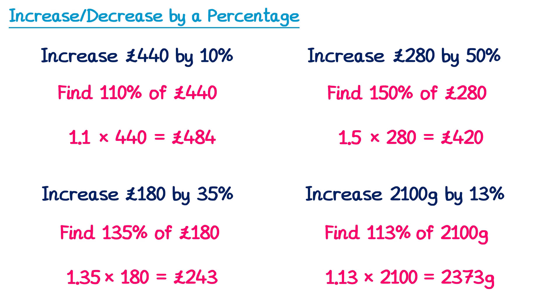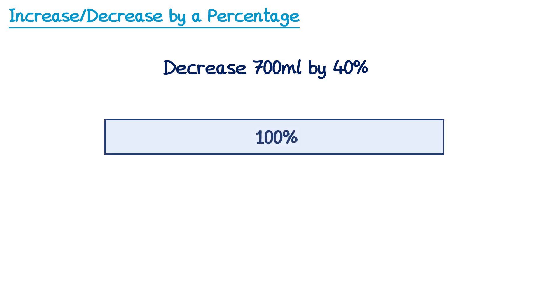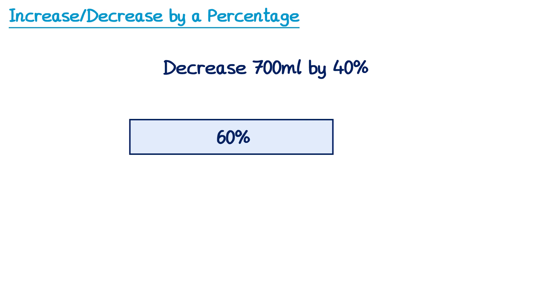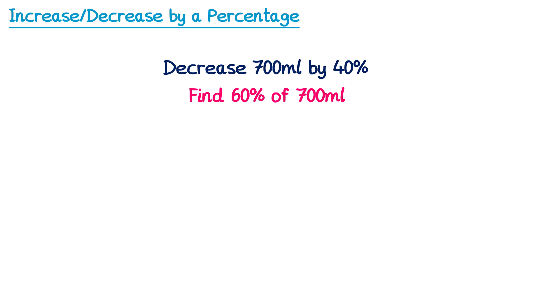What about using this approach for a percentage decrease? Let's look at decrease 700 millilitres by 40%. If we have 100% and decrease by 40%, we do 100% − 40% = 60%. So the answer is the same as finding 60% of 700. We do 60 divided by 100, which is 0.6, then multiply by 700, giving 420 millilitres.